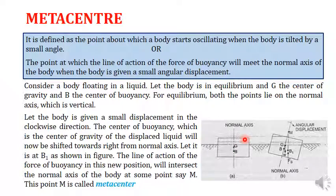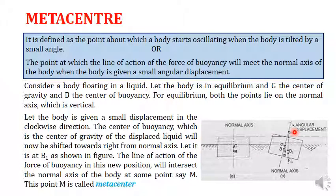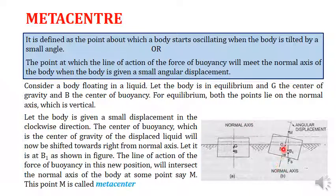Without tilting, the body is in equilibrium — suppose B is lower than G and the body is in equilibrium. If a certain angular displacement is required to be applied left or right, we ask: at what angle is the body in a stable condition? It may be in stable or unstable equilibrium — we will discuss this in coming slides. For now, we focus on the metacenter and the change in position of the normal axis.